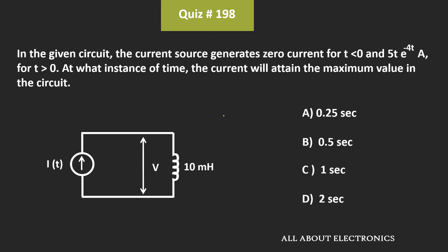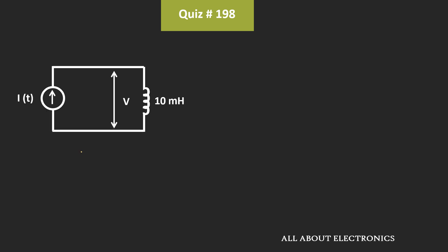Hey friends, welcome to the YouTube channel all about electronics. In this question we have been given a circuit where the current source generates zero current for time t less than zero, and for time t greater than zero the current is given by the expression i(t) = 5t·e^(-4t). We have been asked to find the time instance at which the current attains its maximum value.